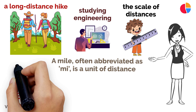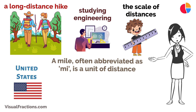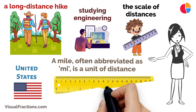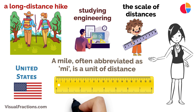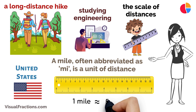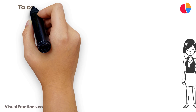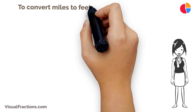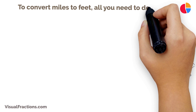A mile is used in the United States and a few other countries. A foot, represented as ft, is a shorter unit of distance. Here's the key part: one mile is equal to approximately 5,280 feet.